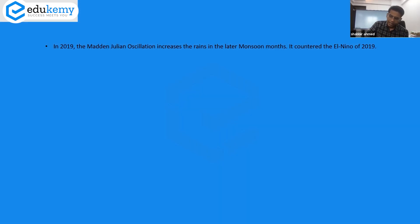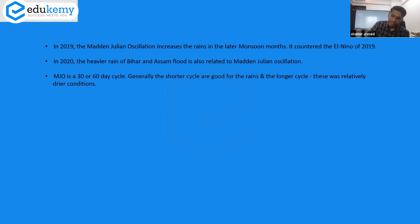In 2019, the MJO increased the rains in the later monsoon months. It countered the El Nino of 2019. In 2020, the heavier rains of Bihar and the floods are also related to the MJO. The details will come out a bit later maybe, but this year also we have seen some MJO effect on Bihar for heavy rainfalls and the floods in Bihar and Assam.